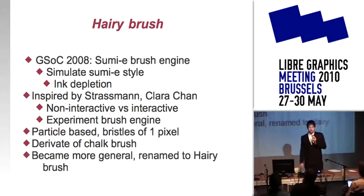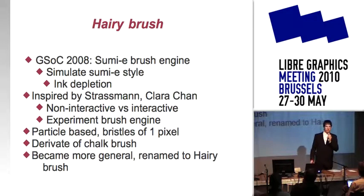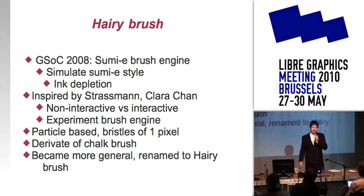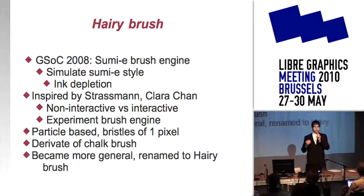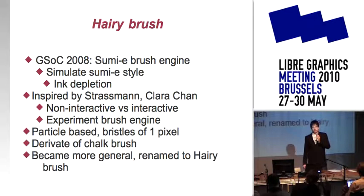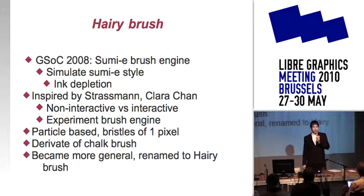I will start with the Hairy brush. It was a Google Summer of Code 2008 project, and the purpose was to simulate Sumi-e style Chinese-Japanese painting. There was one particular feature that Boudewijn wanted from me — Boudewijn is the Krita maintainer — and it is ink depletion. The work is inspired by Steve Stretzmann, who wrote a short article about hairy brush. His idea works in a non-interactive way, more like vector graphics: you define some points, define pressure at those points, and his algorithm renders the stroke. There is also an interactive model from Clara Chen, and you can interactively paint Sumi-e style with her model. I took inspiration from both.